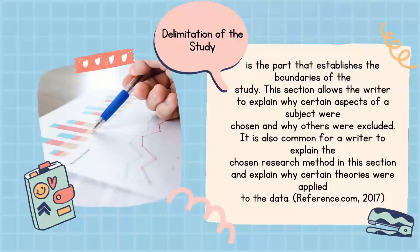On the other hand, the delimitation of the study is the part that establishes the boundaries of the study. This section allows the writer to explain why certain aspects of a study were chosen and why others were excluded. It is also common for a writer to explain the chosen research method in this section and explain why certain theories were applied to the data.